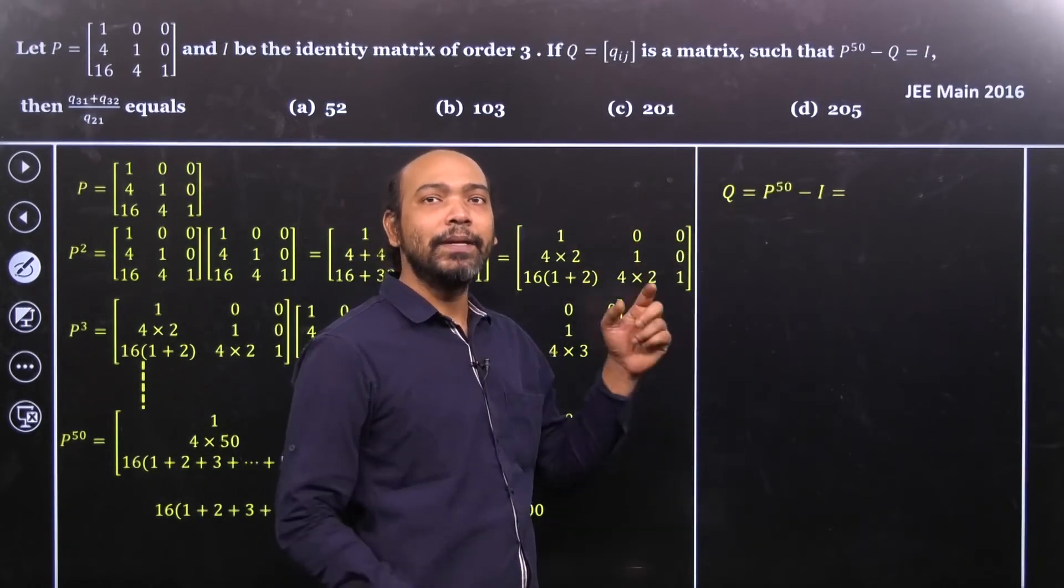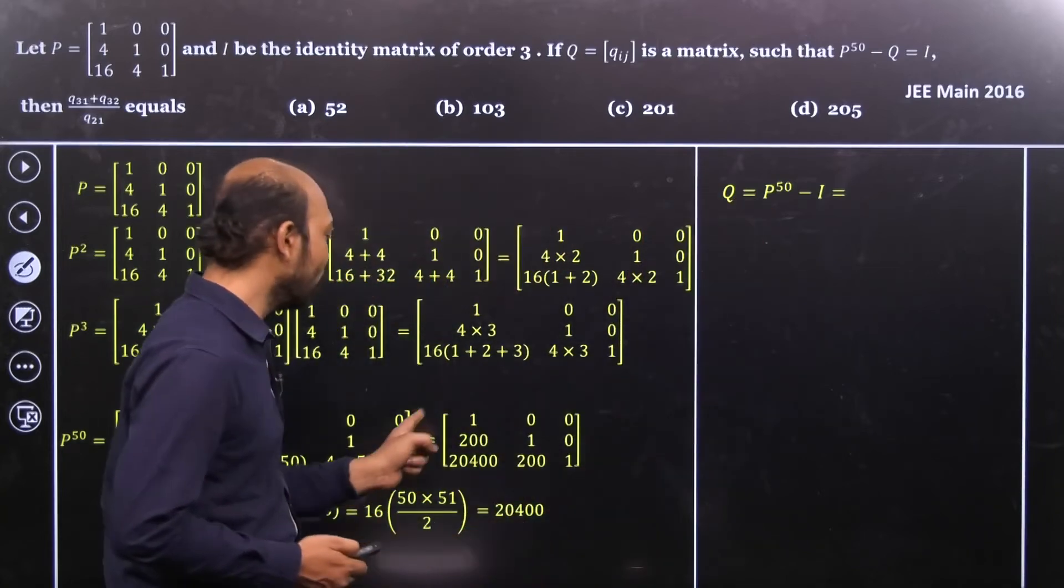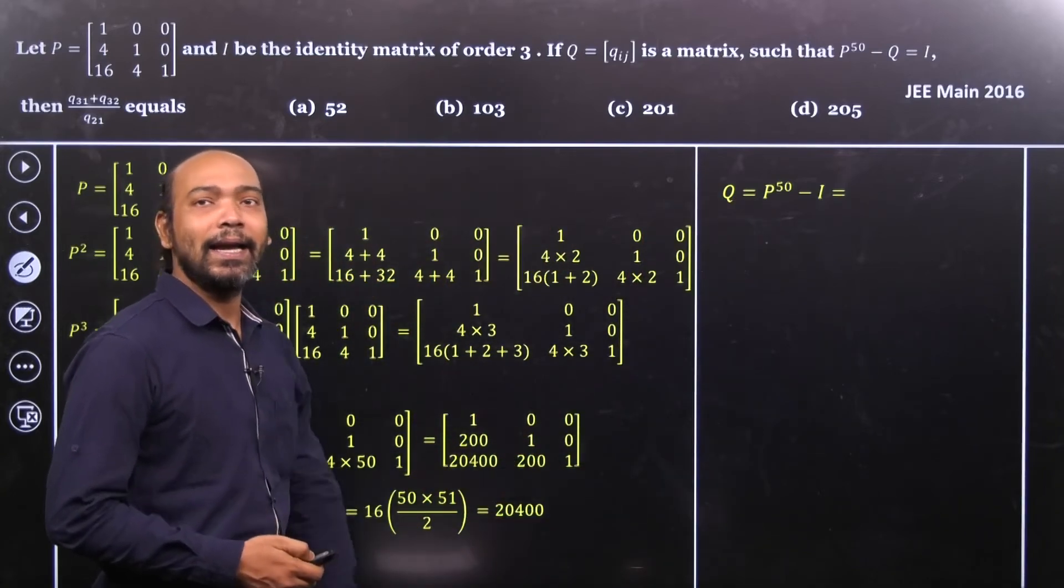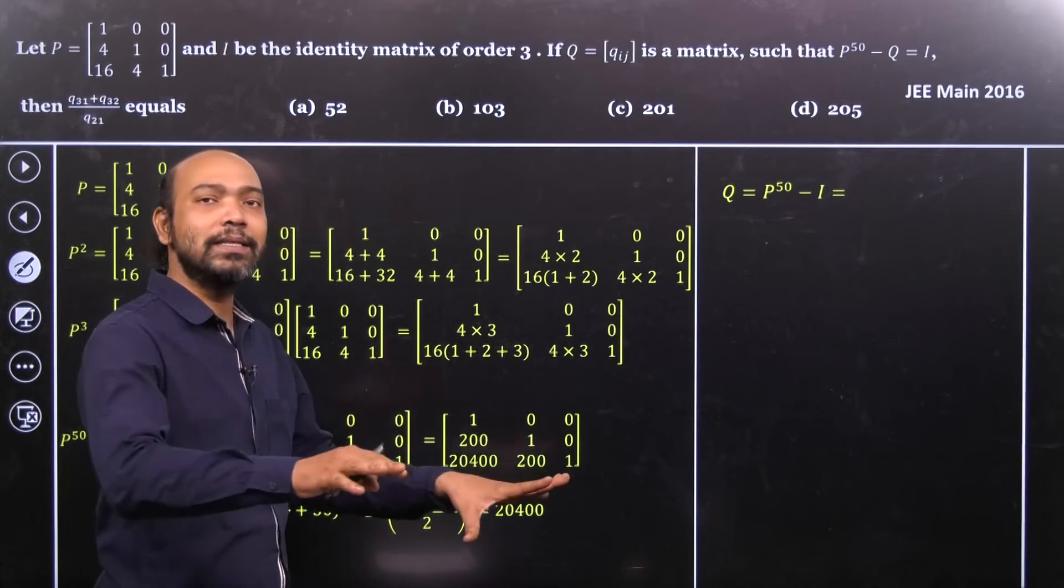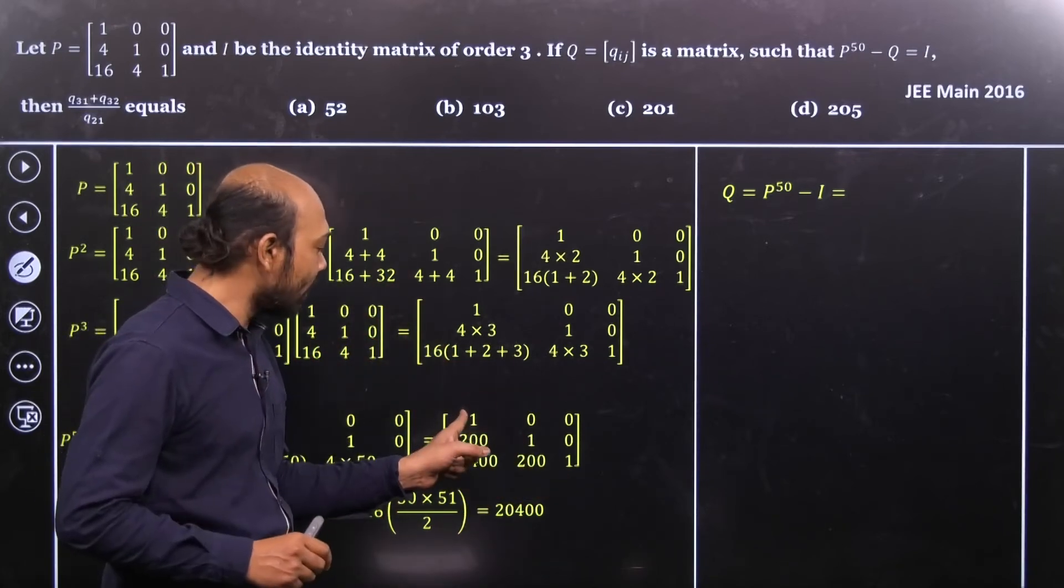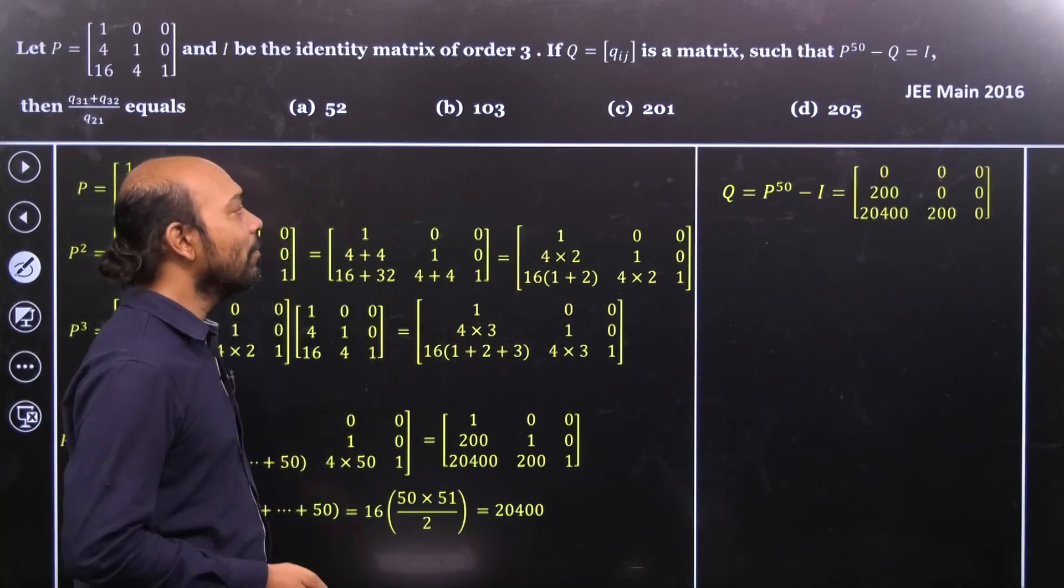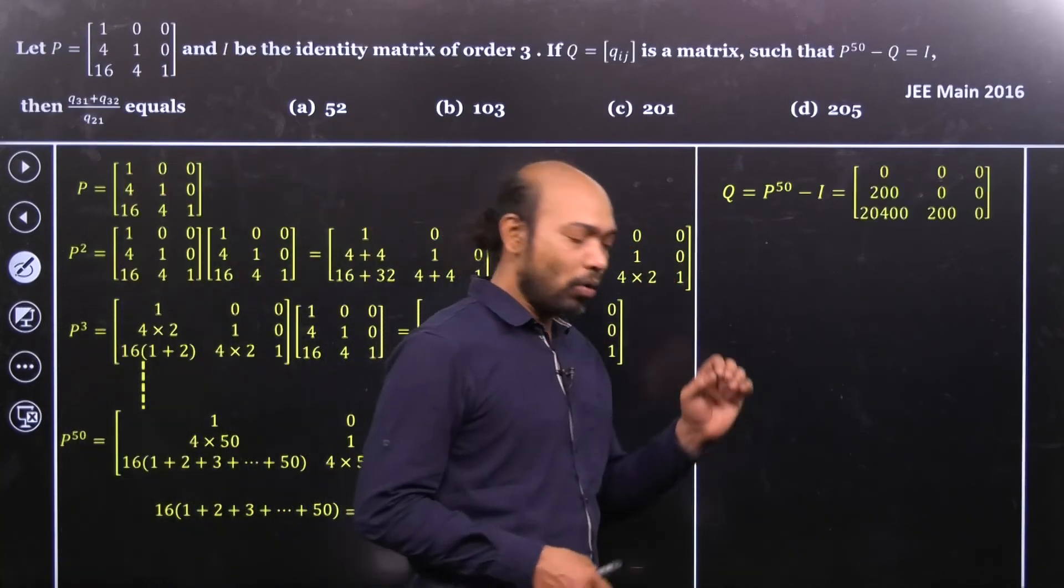So here, we consider that P to the Q is equal to P to the power 50 minus I. Now what is P to the power 50? We know that this is P to the power 50. And identity matrix means everyone is 0 except the diagonal elements and diagonal elements are 1. So if I subtract, all the diagonal elements became 0. So therefore, we can calculate that PQ.